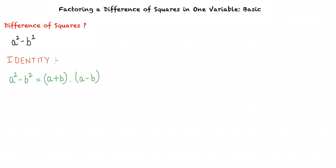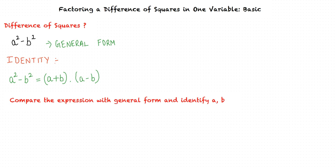We will follow these steps in order to solve problems of this type. First, compare the expression with the general form of the difference of squares, which is a squared minus b squared, and identify a and b. Finally, we apply the algebraic identity to factor the difference of squares.